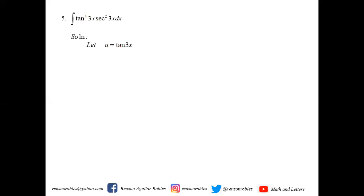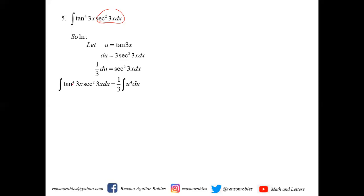Now let's look at powers of tangent. A tangent function can be integrated if there is a secant squared in the integrand. For tangent to the 4th of 3x times secant squared 3x dx, by direct substitution we let u equal tangent 3x, so du equals 3 secant squared 3x dx, meaning 1/3 du equals secant squared 3x dx. The integral becomes 1/3 times the integral of u to the 4th du, which equals 1/3 times u to the 5th over 5 plus c, giving 1/15 times tangent to the 5th of 3x plus c.